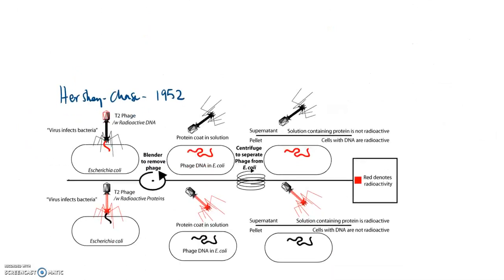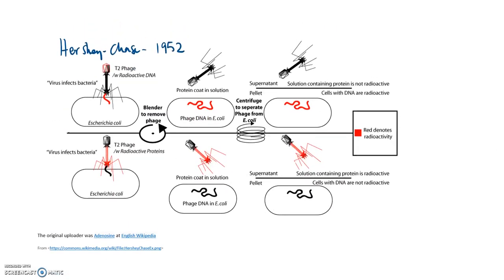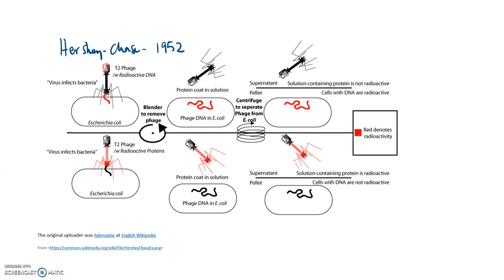The next experiment I want us to look at was done several years later in 1952 by Hershey and Chase. Let's talk about this for a minute because there's a lot going on in this experiment. The first thing is I want you to notice that this label right here, T2 phage, that is just a type of bacteriophage. A bacteriophage is a virus that infects bacterial cells, and E. coli is a bacterial cell. The E. coli is the host that's being infected by the bacteriophage.